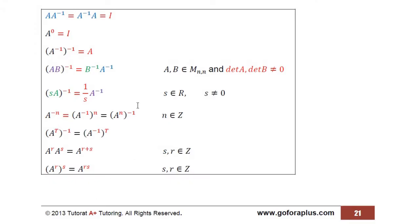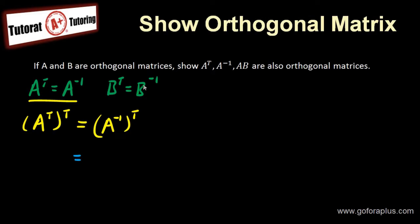These are in the summary of the linear algebra. It's on my website, goforaplus.com. You can take a look at the properties. So this is going to be A transpose minus one. That's one of the properties on the summary. You can switch the minus one and the T.